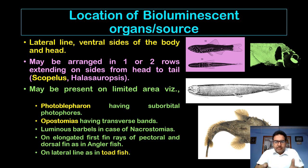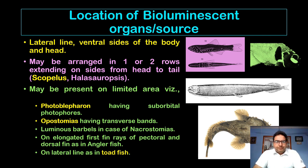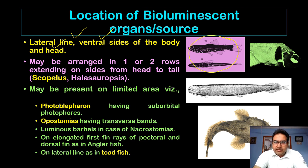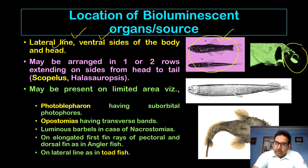Regarding where bioluminescent organs are present on the body: in some fishes they are found along the lateral line and on ventral sides of the body and the head. They may be arranged in one or two rows extending from head to tail, as in the case of Scopelus — where the light source extends all the way from head to tail, visible in the encircled fish.